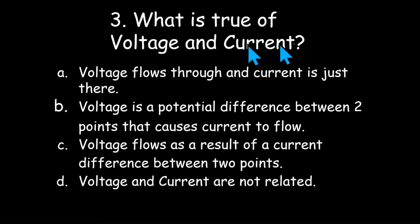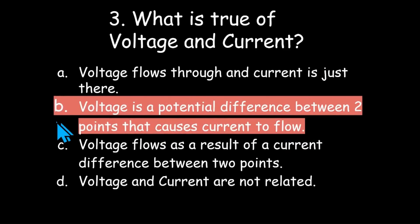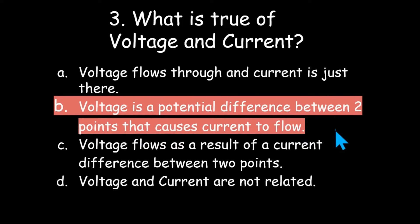What is true of voltage and current? Voltage flows through and current is just there. Voltage is a potential difference between two points that causes current to flow. Voltage flows as a result of a current difference between two points. Or voltage and current are not related. The correct answer is B: voltage is a potential difference between two points that causes current to flow. You cannot have voltage without having a reference point — it is always measured between two points.